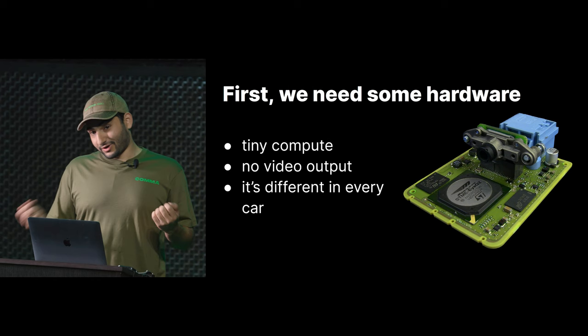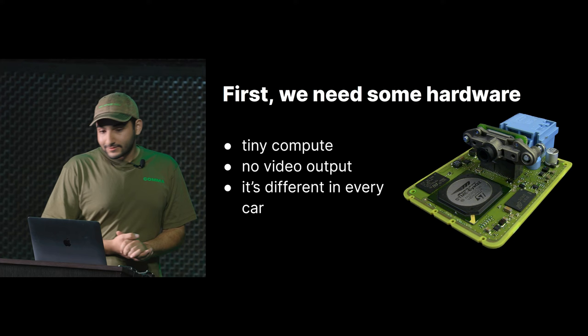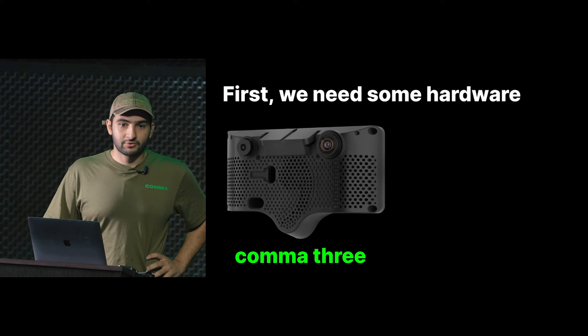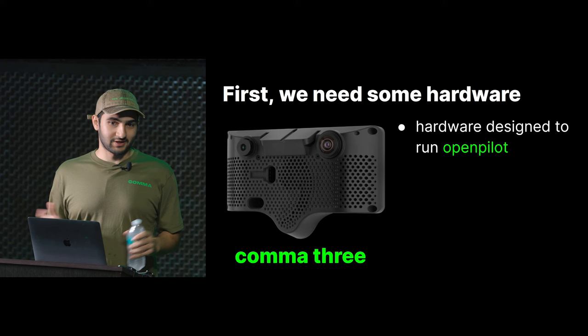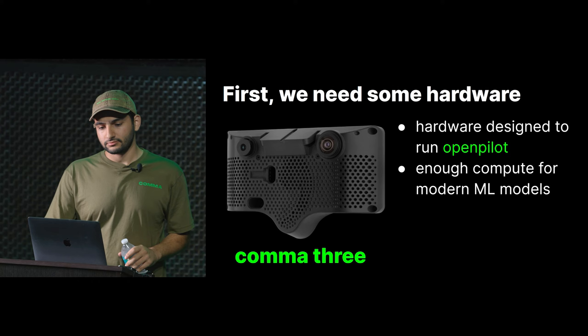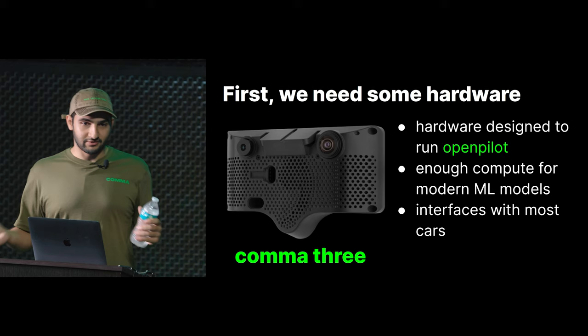This one has a Mobileye chip. So instead, since we can't use this, what we do is we ship the Comma 3. We launched this at last Comic-Con, and it has everything you need to run OpenPilot. It's got three cameras, it's got a Snapdragon 845, so every single one has the same processor — whether you have a Toyota Corolla, a Hyundai Sonata, or a Honda Civic. It's got enough compute to run modern machine learning models, and it interfaces with every single car exactly the same way.